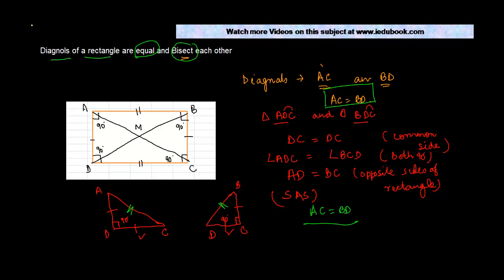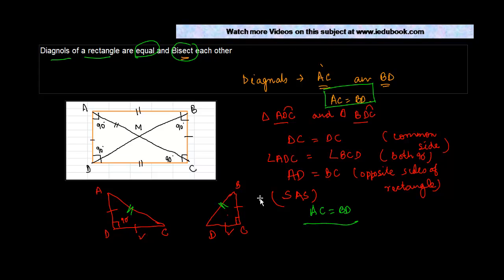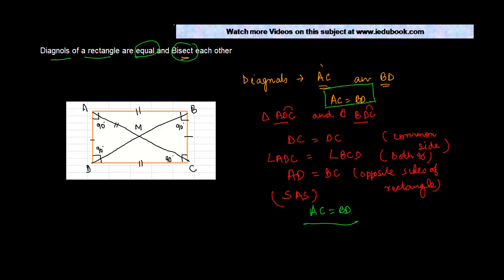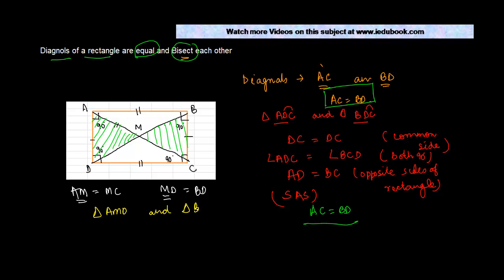For the second part — diagonals of a rectangle bisect each other — this means that AM is equal to MC, and MD should be equal to MB. To prove this, we need to consider the sides AM and MD together, so we will take triangle AMD and triangle BMC.